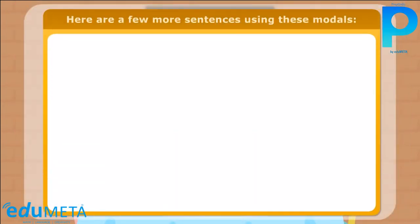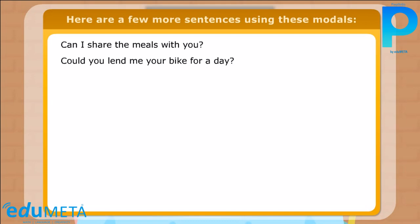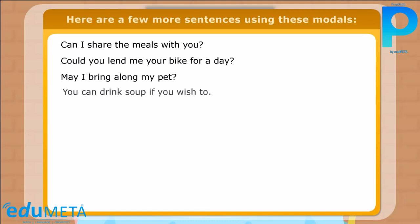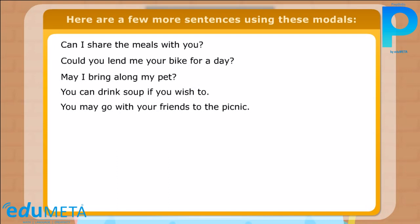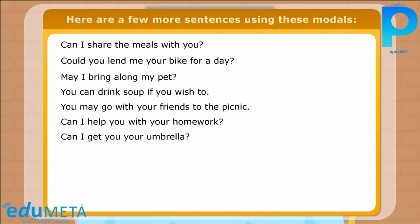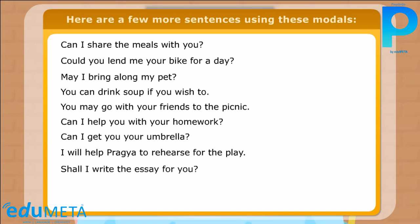Would you like some coffee? — polite. You must come here again — very polite. Here are a few more sentences: Can I share the meals with you? Could you lend me your bike for a day? May I bring along my pet? You can drink soup if you wish to. You may go with your friends to the picnic. Can I help you with your homework? Can I get you your umbrella? I will help Pragya to rehearse for the play. Shall I write the essay for you? Would you like to stay back for the concert?